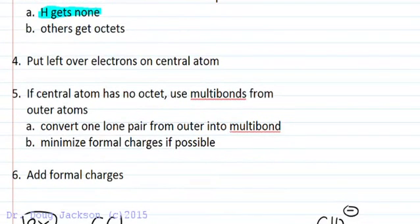We want to put any leftover electrons on the central atom, and if the central atom does not have an octet after this step we'll use multibonds to do this. To do that we're converting a lone pair into a multibond. Minimize formal charges if possible during this step. Then finally we'll add the formal charges to our Lewis structure.